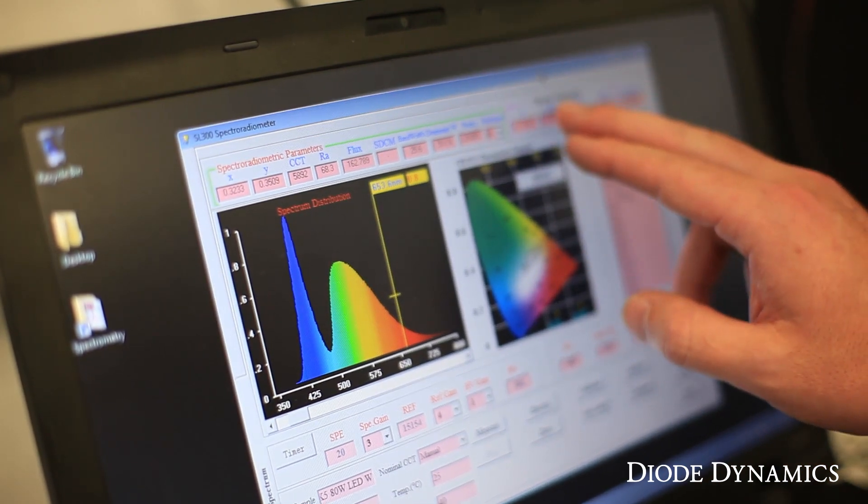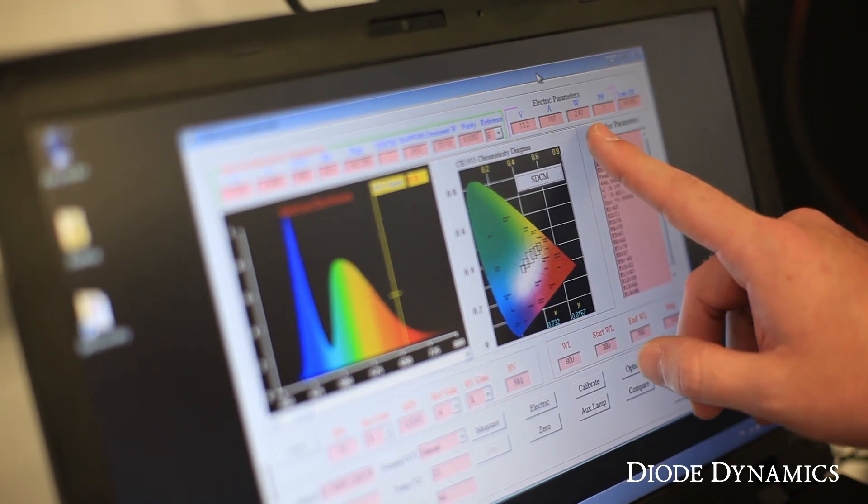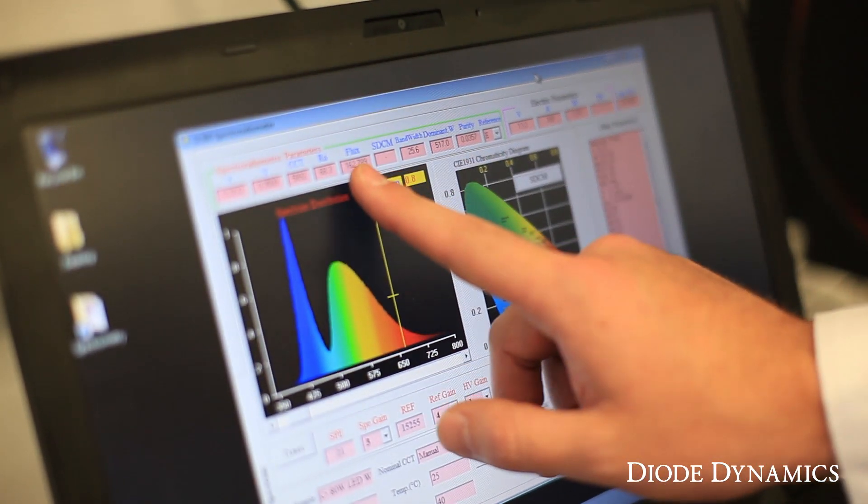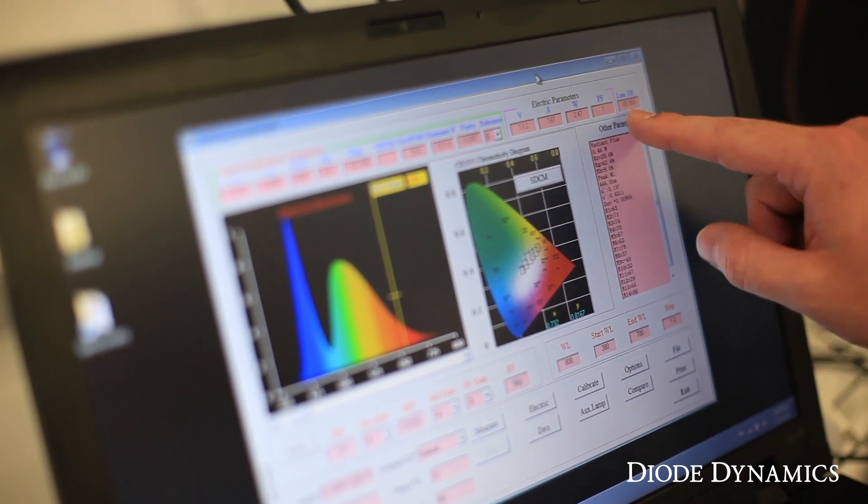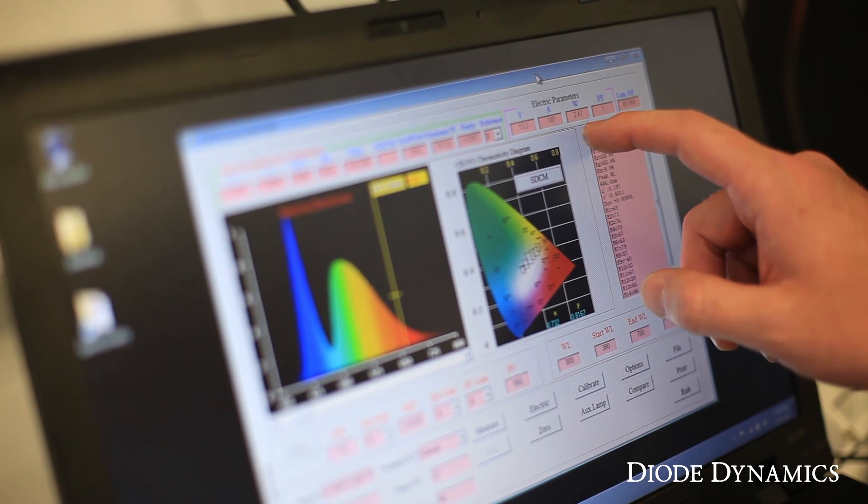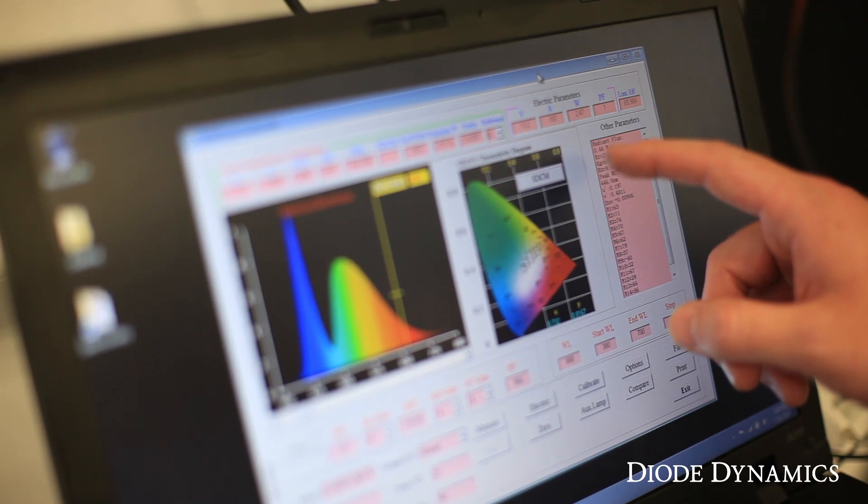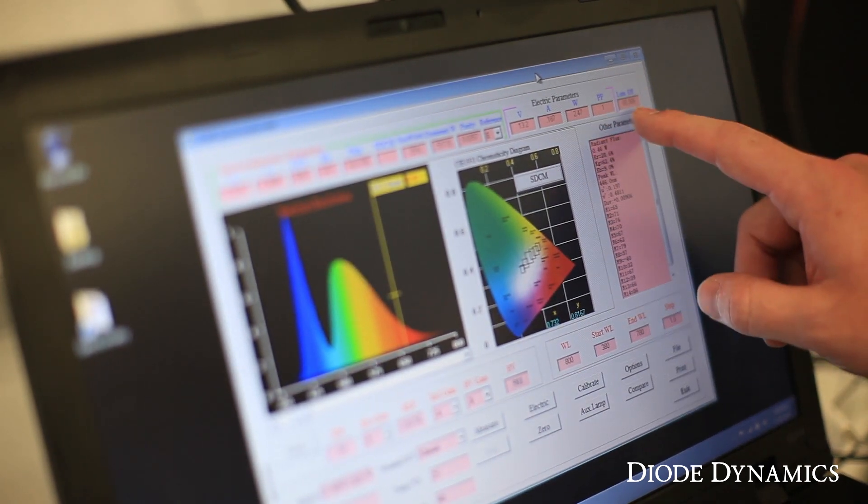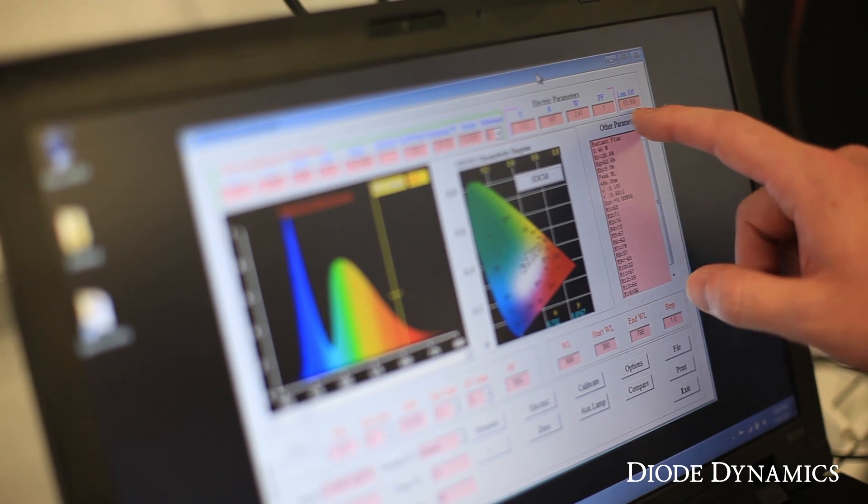Now, the final thing we look at is the electric parameters. We input our current and wattage, and then we take the total flux divided by watts to get our efficacy. So this bulb is making 66 lumens for every watt of power that it's using. Power consumption is not a huge deal for automotive use, but you can see for home use, you want to make sure LED is getting as many lumens as possible per watt of power. That makes it an efficient bulb.